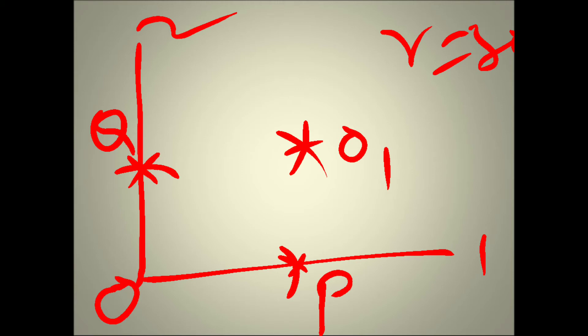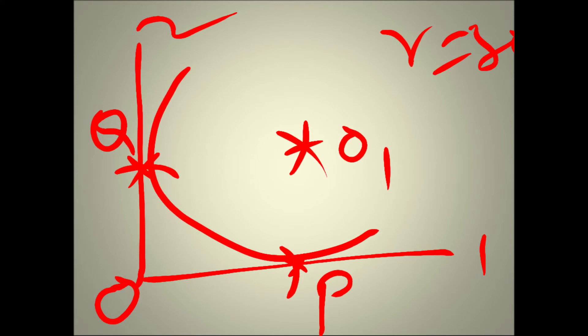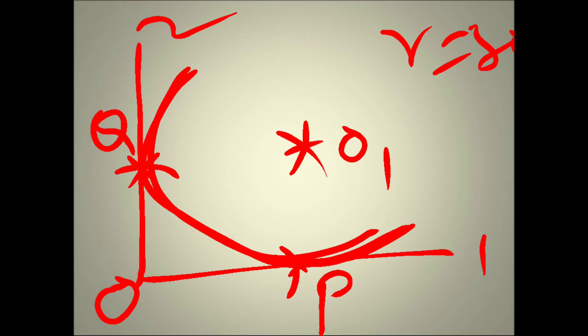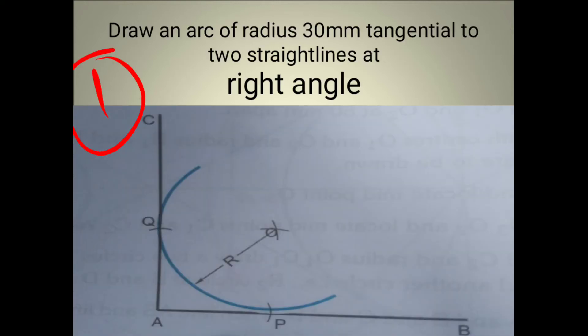Now draw an arc of radius 30 mm as given in the problem. With center O1, draw an arc which touches the two straight lines. This is called the tangential arc of two straight lines at an angle of 90 degrees.